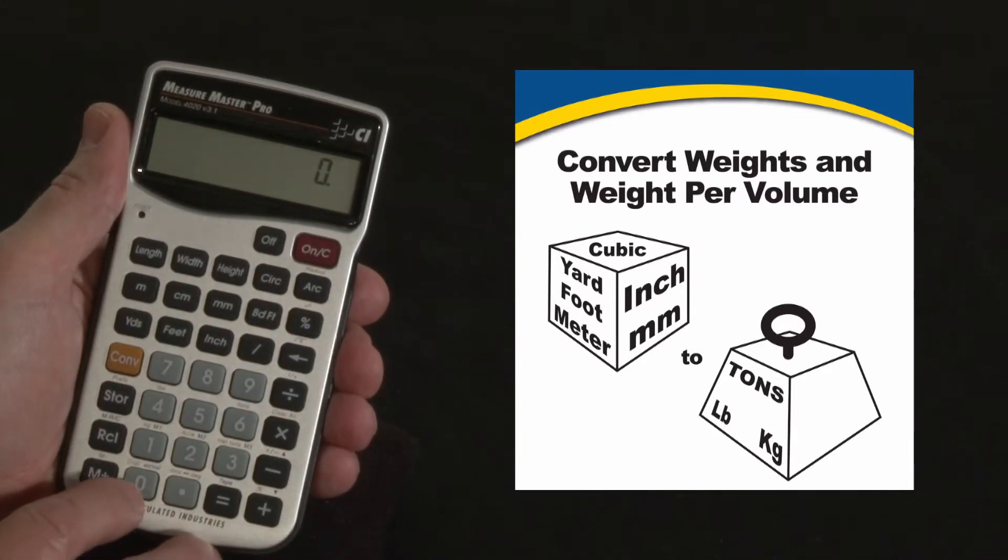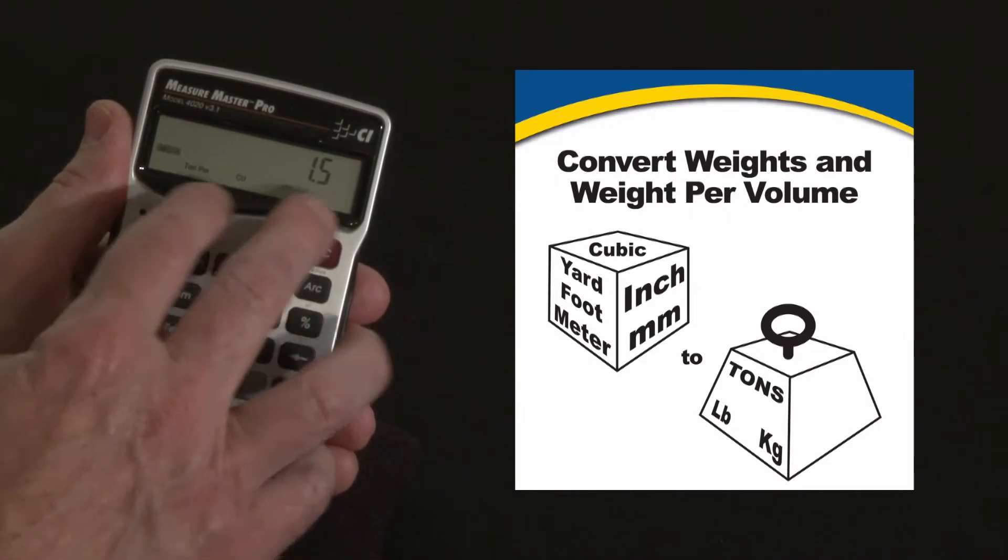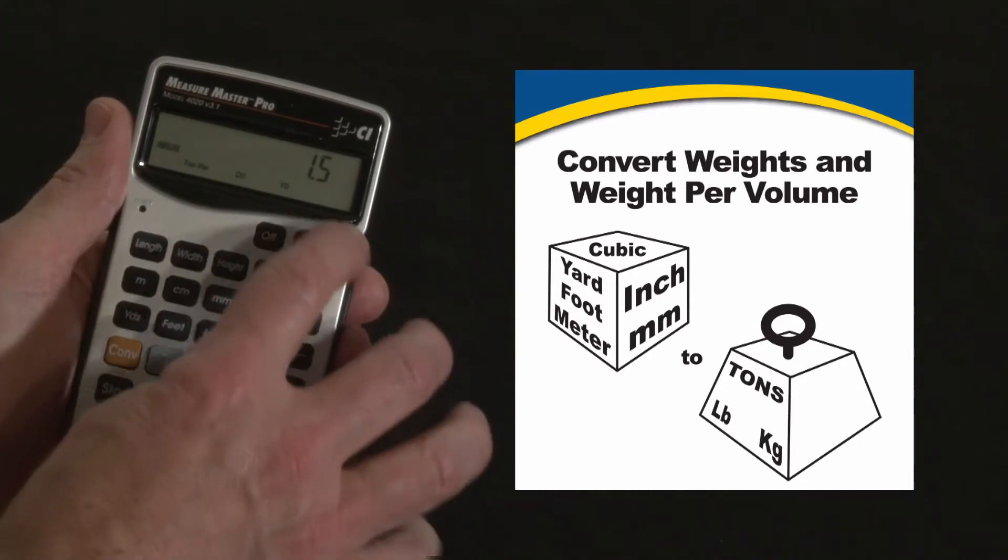The default factor we have stored in here, if you recall, is 1.5 tons per cubic yard. You can store any value for any kind of volume quantity you want there, but we're going to use that for right now.